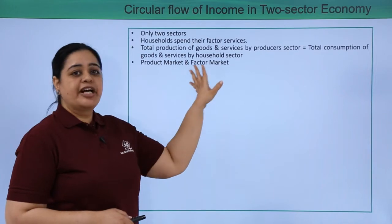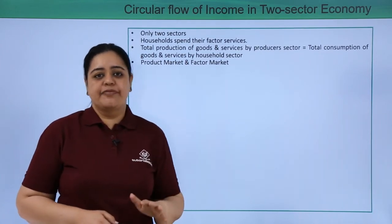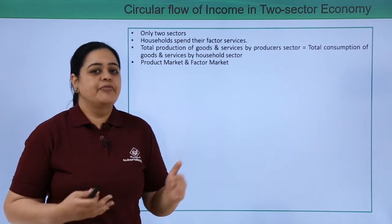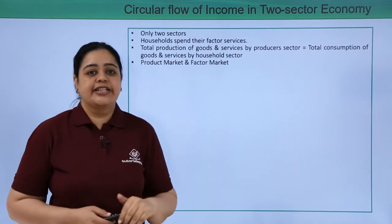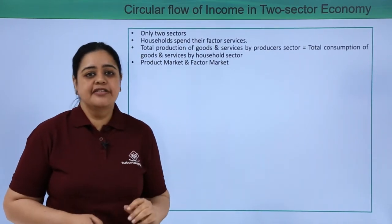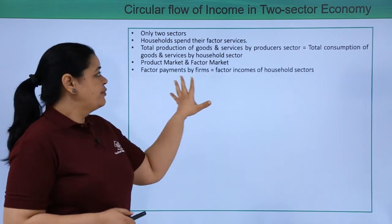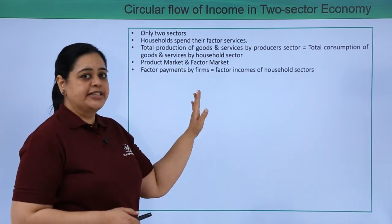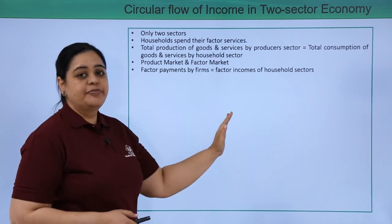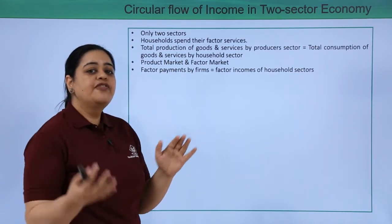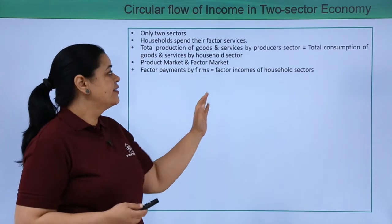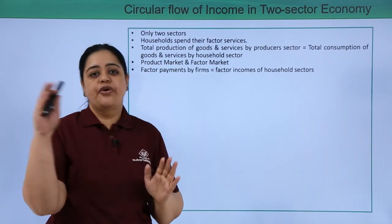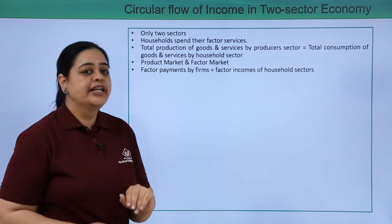We have the product market — where goods and services are sold and bought — and the factor market, which is about factor services. Whatever payment is made by the business firms, that is the factor payment to the household for providing the factor services, and that would be the factor income of the household sector. There would be no other income.